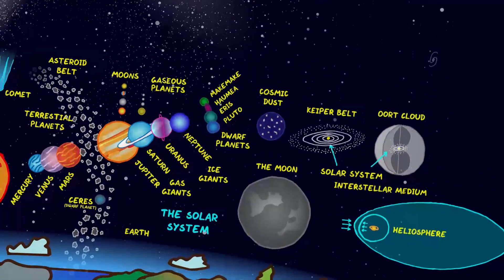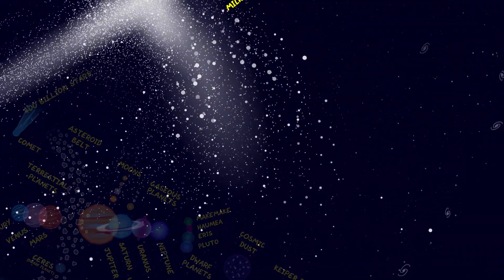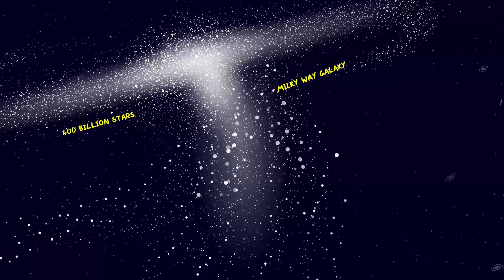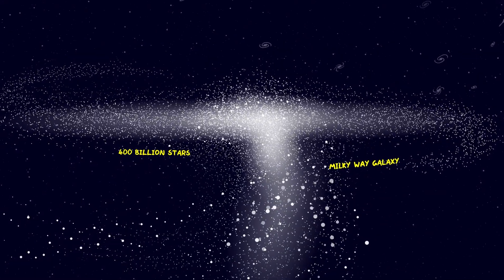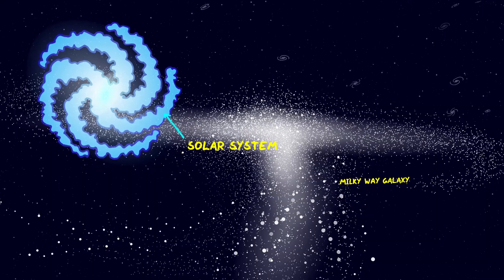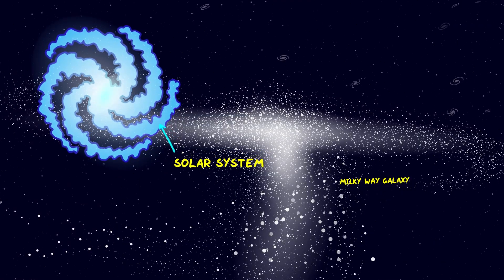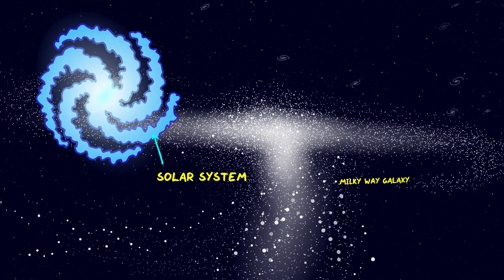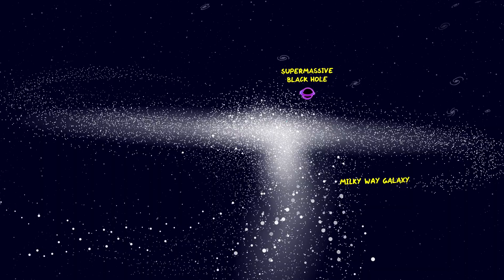Looking beyond our solar system we get to our galaxy, the Milky Way, made of about 400 billion other stars spinning in a giant spiral. The solar system takes about 250 million years to orbit the Milky Way and it's done this about 20 times in the lifetime of our Sun. In the center of the Milky Way is a supermassive black hole with a mass 4.6 million times that of the Sun.